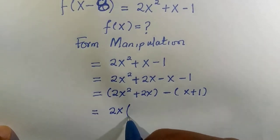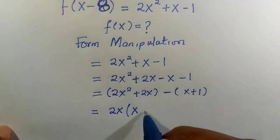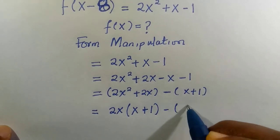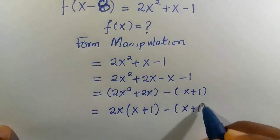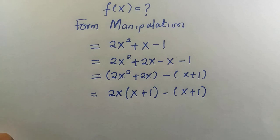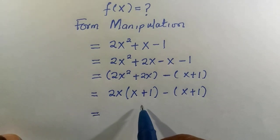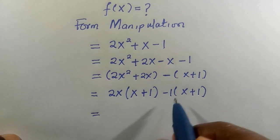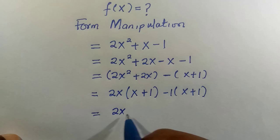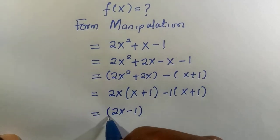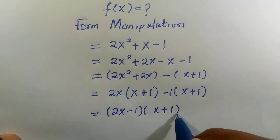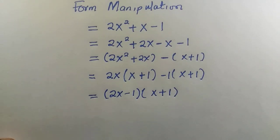We take it out. Then we are left with x + 1 minus 1 - (x + 1) as well. Since we have x + 1 that is common and here we have 1, we try to group this together as (2x - 1)(x + 1). Here is what we are going to have.